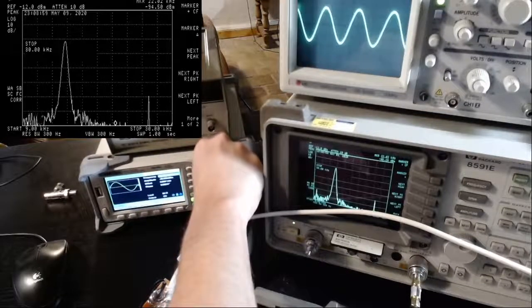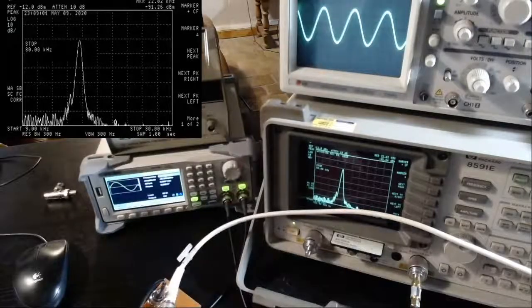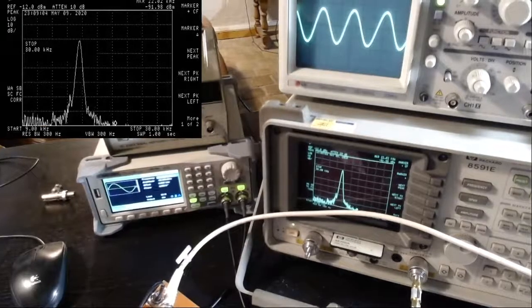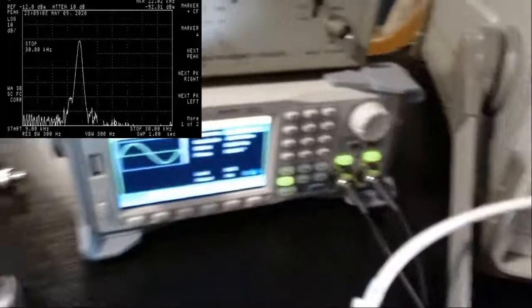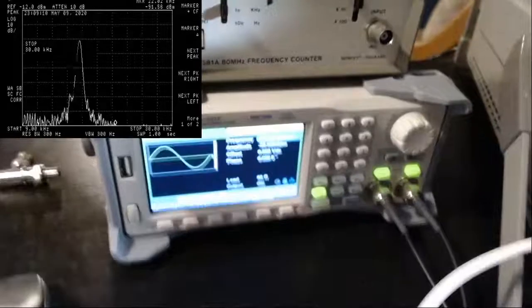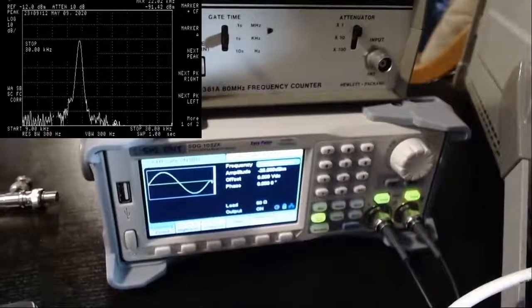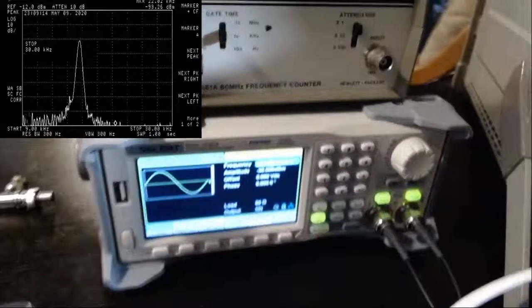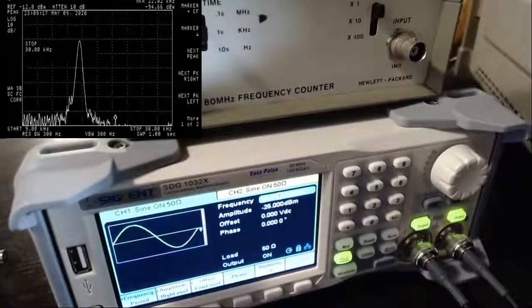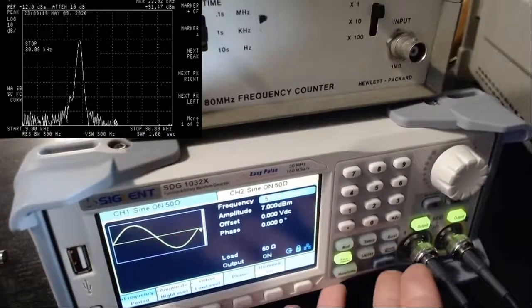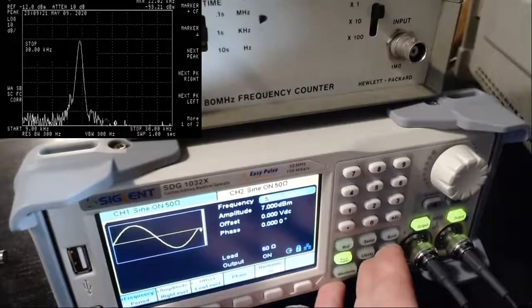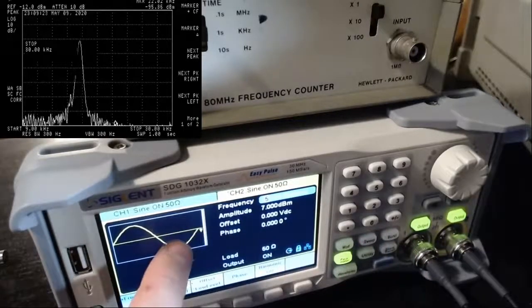It's incredible how well this works. Something interesting is—let me zoom back here. At the moment channel 2, which is the local oscillator, is set as you can see as a perfect sine wave at 25 megahertz with 7 dBm of power.